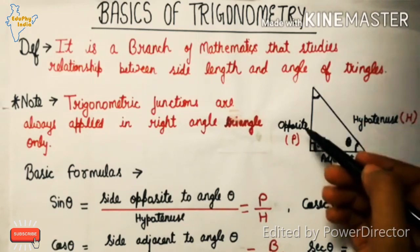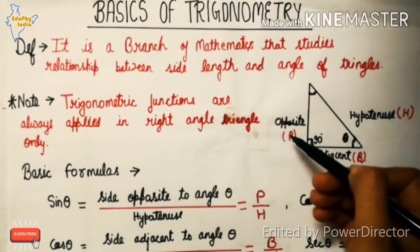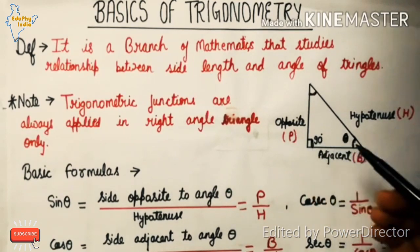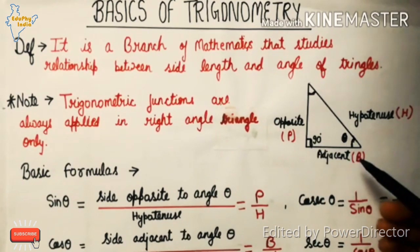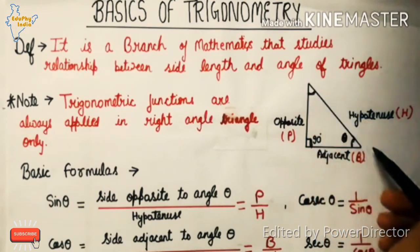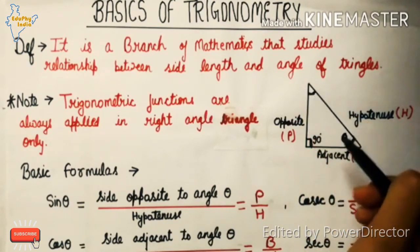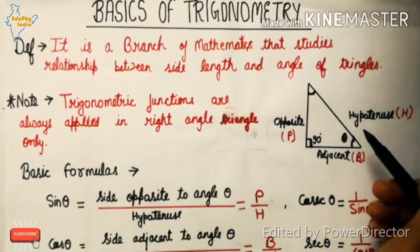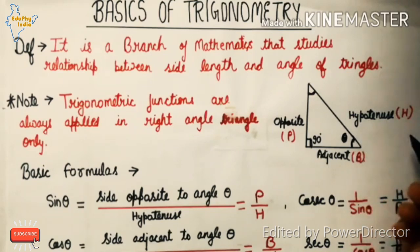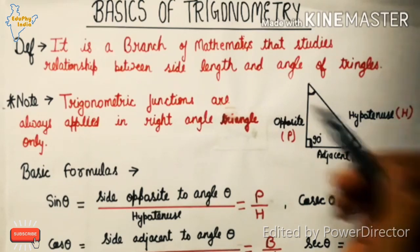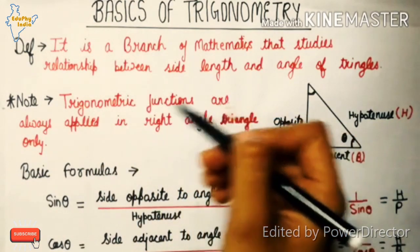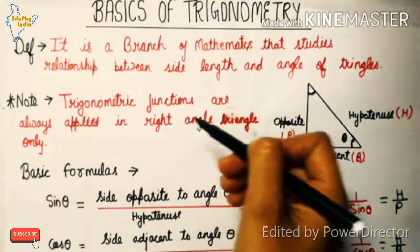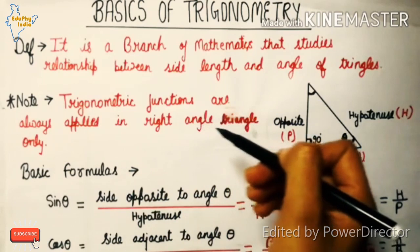The side opposite to angle theta is called the perpendicular. The side adjacent to angle theta is called the base. The longest side in a right angle triangle is the hypotenuse, denoted as H. Note that trigonometric functions are always applied in a right angle triangle, meaning a triangle with a 90 degree angle.